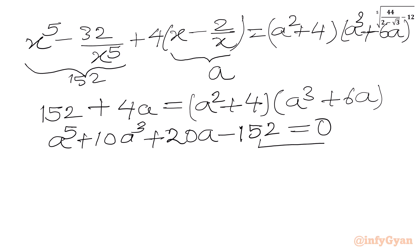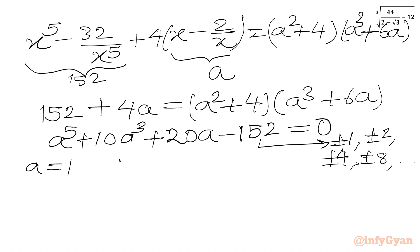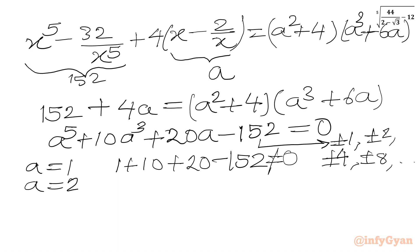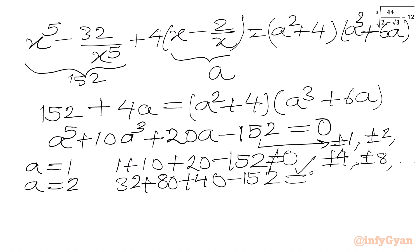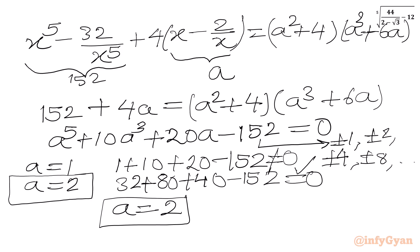Now I will find factors of 152: ±1, ±2, ±4, ±8, and so on. Plugging in a = 1: 1 + 10 + 20 − 152 ≠ 0. Plugging in a = 2: 32 + 80 + 40 − 152 = 0. Yes, this is true. So a = 2 is our first solution. We will now use the synthetic division method.